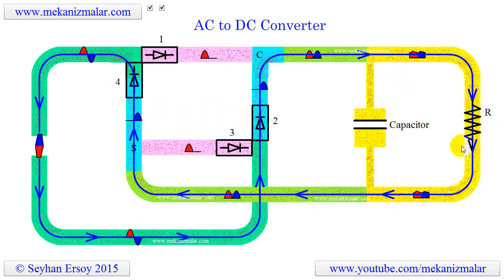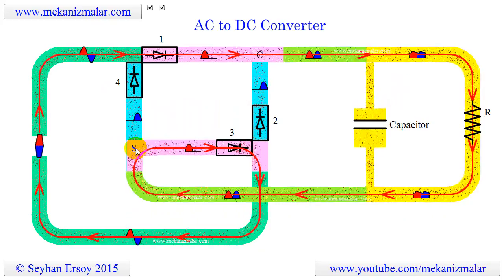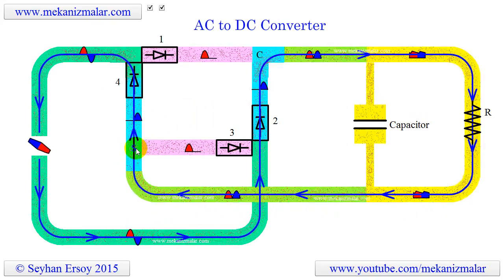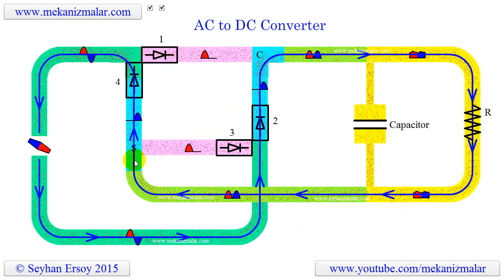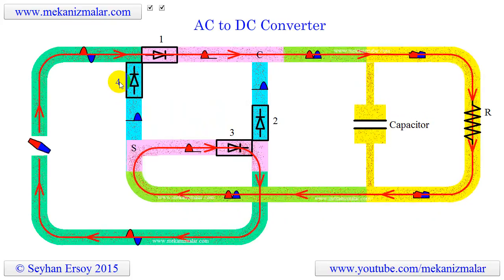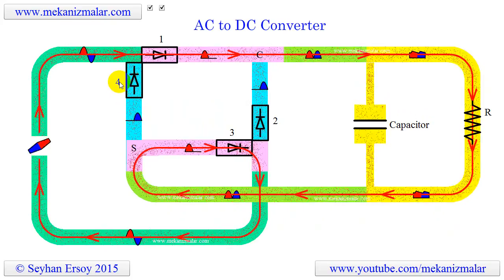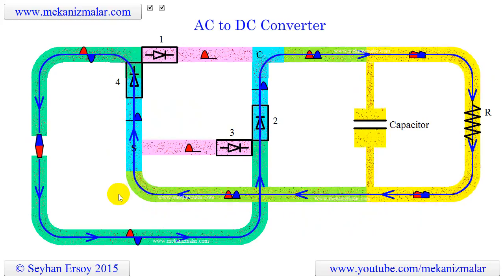On the way back to the alternator, the current splits in two different paths at point S. The red current goes to the alternator by passing through diode 3. Half a cycle later, the blue current goes to the alternator by passing through diode 4. This completes the current flow for one cycle.